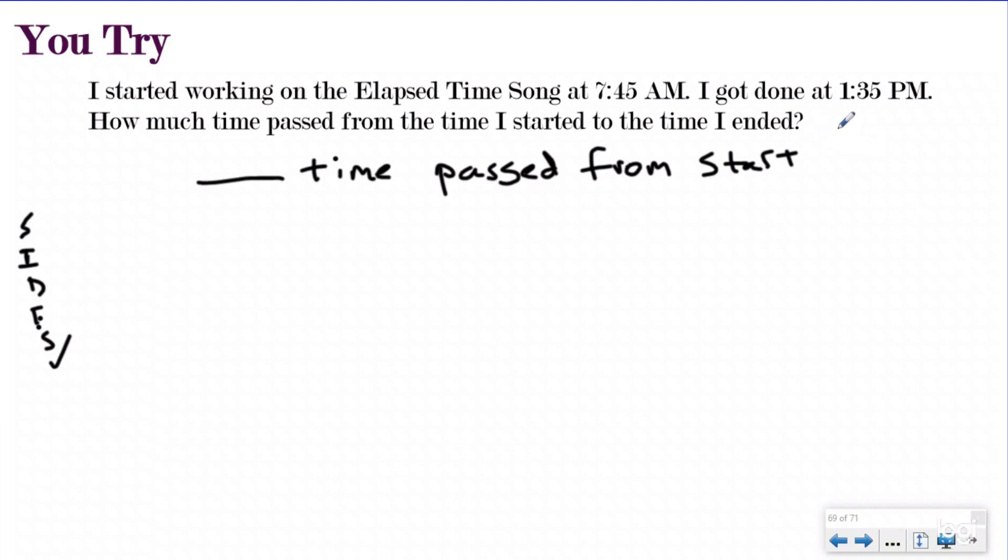And you could have written from the time I started to the time I ended. As long as it's a complete sentence and it's detailed, that's okay. So if I say from start to end, I feel pretty good about that as well. So I'm looking for anything about the start time, the end time, or any time that has passed. This is obviously just based on my statement and the fact you're doing an elapsed time lesson and elapsed time problem. So I started working on the elapsed time song, which is fantastic, I might add, at 7:45 a.m. I got done at 1:35 p.m. How much time passed. So the tricky thing here you need to pay attention to is you're going from morning to afternoon. You're going to pass 12. You know that already because your start time was a.m. and your end time was p.m.